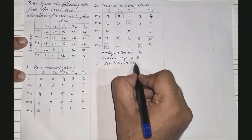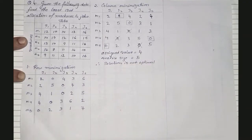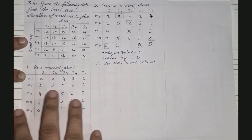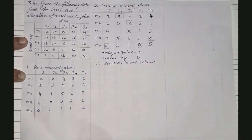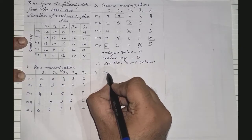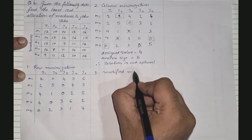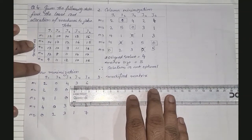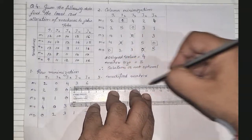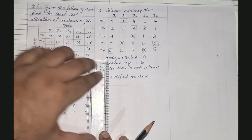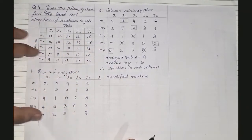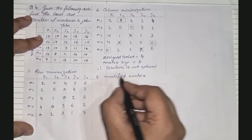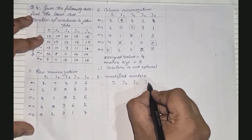Since the solution is not optimal, we proceed to step three: creating a modified matrix. A modified matrix is needed when the number of assigned zeros does not equal the matrix size. We will create a new table with the same job and machine structure — J1 through J5 and M1 through M5 — to work toward an optimal solution.